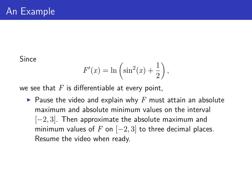Now recall that F' is defined everywhere. Pause the video and explain why that means F must attain an absolute maximum and minimum on the interval negative two to three. Then approximate the absolute maximum and minimum values to three decimal places, and resume the video when you're ready.